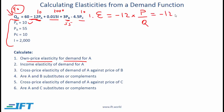The own-price elasticity of demand for A is the coefficient minus 12 multiplied by the price over quantity: minus 12 times 10 divided by 90, which gives minus 1.33. The own-price elasticity is generally negative because when own price goes up, quantity demanded goes down. The absolute value of 1.33 is greater than 1, so this is elastic.